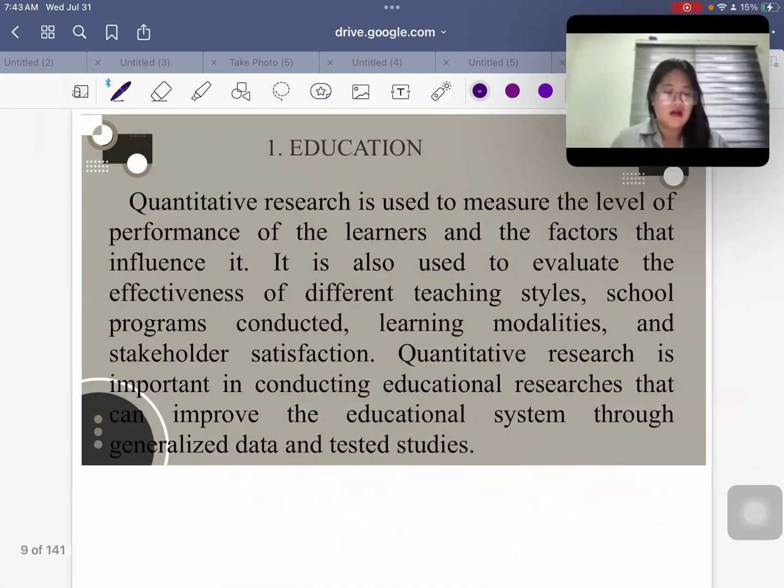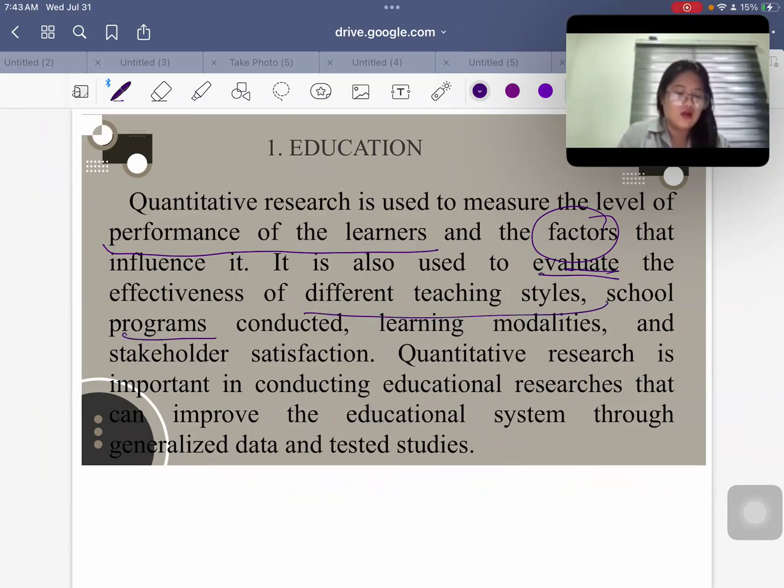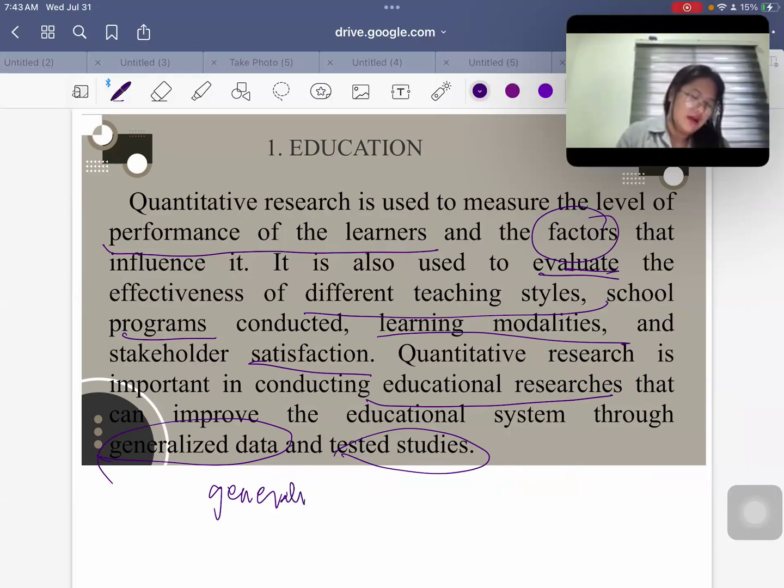So what would be the importance of quantitative research? Let's look into this. So quantitative research is used to measure the level of performance of the learners and the factors that would influence them. It is also used to evaluate the effectiveness of various teaching styles, school programs, learning modalities and satisfaction of people. So quantitative research is important in conducting educational research that can improve the educational system through generalized and tested studies. So there is the room for generalization here, especially if the population is well represented by the sample. So here we are measuring the performance, the satisfaction, the factors. It's about numbers. Really, it's about numbers.